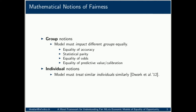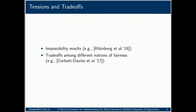Existing notions of group fairness, which is the focus of this work, require a certain metric quantifying benefit or harm to be equal across socially salient groups. For instance, equality of odds considers a classifier fair if it distributes various types of error — i.e. false positive and false negative rates — equally across different groups.